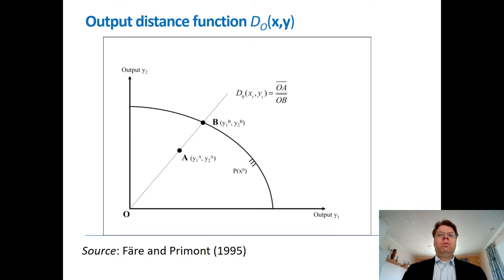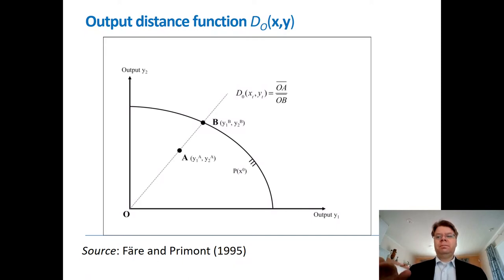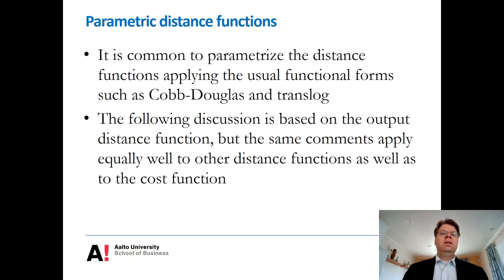Just to remind you about the concept of the output distance function: in theory the distance function measures the distance to the frontier and we can think about it as a generalization of the production technology — a generalized production function, if you like. It is also possible to parameterize this distance function, applying the usual parameterizations like Cobb-Douglas or Translog.